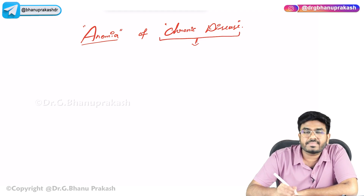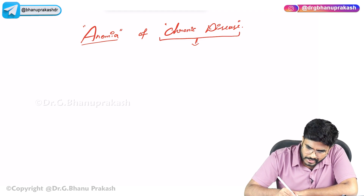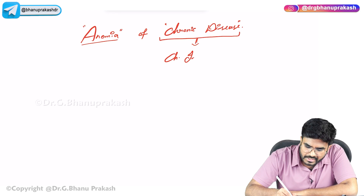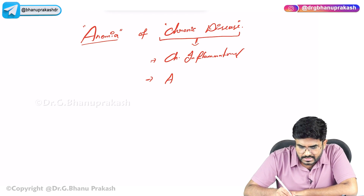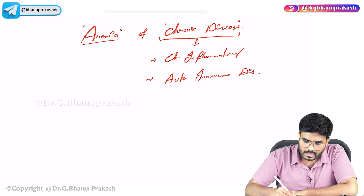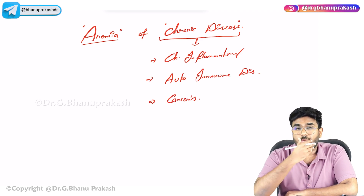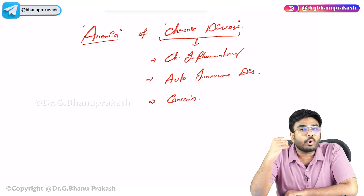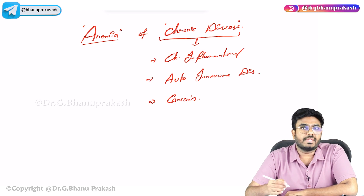What are these chronic diseases? Any disease where there is chronic inflammation in the body — usually chronic inflammatory conditions like autoimmune disorders or even cancers. Any condition where there is a chronic inflammatory state can lead to anemia in this person.